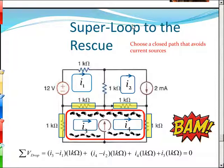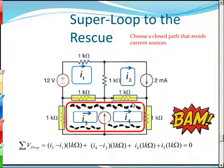When can you use the super loop? When you have any current source — independent or dependent — because you don't know the voltage drop across it. You can choose a path anywhere around the circuit, and the sum will equal zero. We're going to verify this in a lab next week.